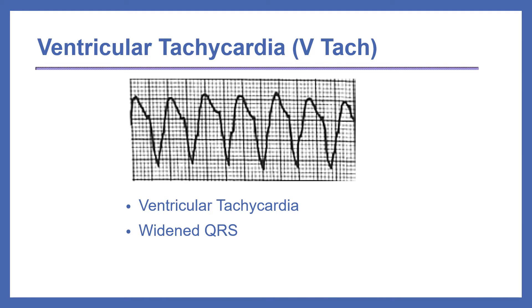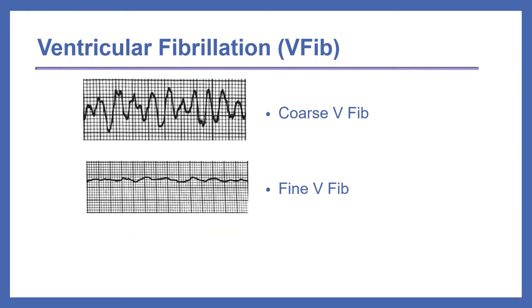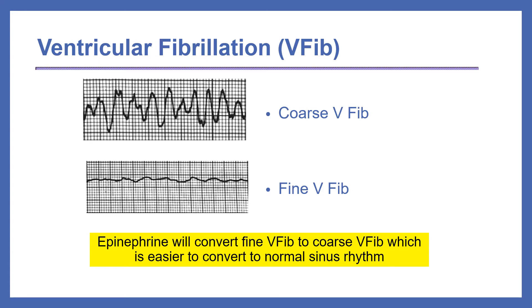Ventricular tachycardia, or VTac, appears on the EKG as a waveform that looks like the edge of a saw — as though you took the regular EKG and widened it so that the QRS becomes the predominant feature of the waveform. Ventricular fibrillation, on the other hand, appears on the monitor as a wormy type of waveform. It can either be coarse VFib or fine VFib. Epinephrine will convert fine VFib into coarse VFib, which is easier to convert to normal sinus rhythm.